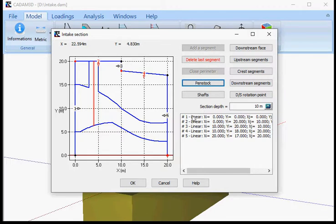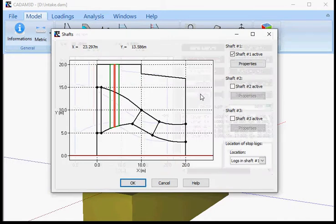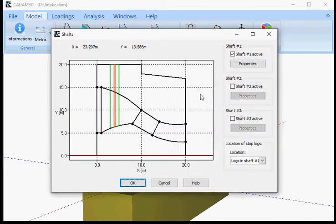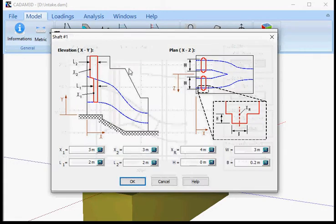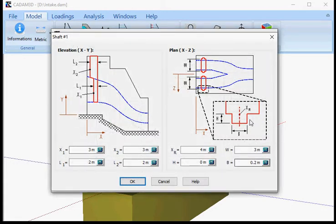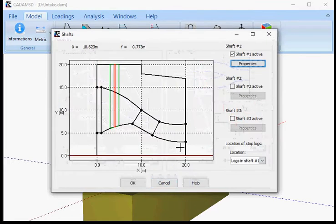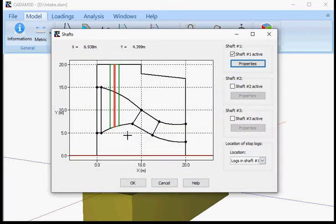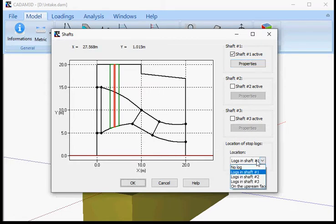Once this is done, then you can place your shafts. In this case, you can go up to three shafts. We only selected one. You select properties, you put all the values here and will locate your shafts inside your section according to the penstock that was defined, and the location of the stop log.